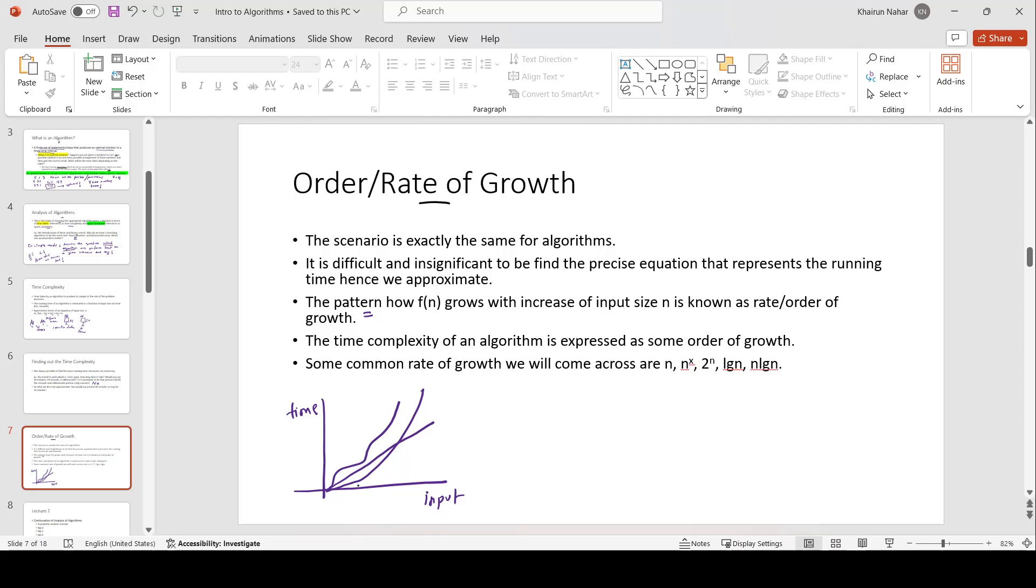Now, we will see that the time complexity of an algorithm or the approximated time complexity of an algorithm is expressed or will be expressed as some order of growth. And some common rate of growth we will come across are n, polynomial, exponential, and logarithmic.